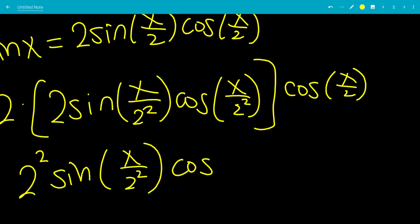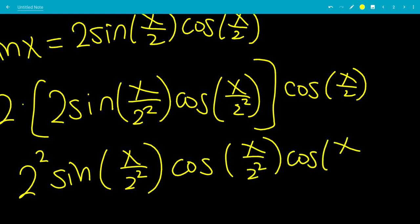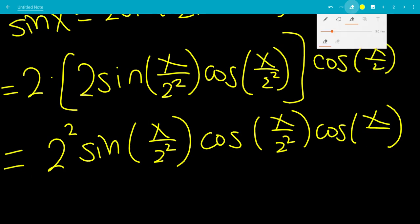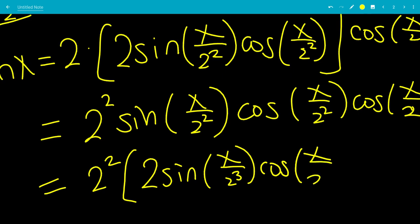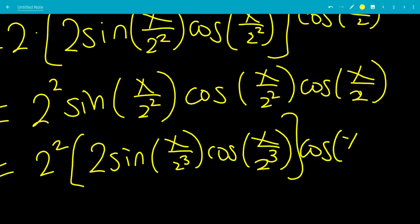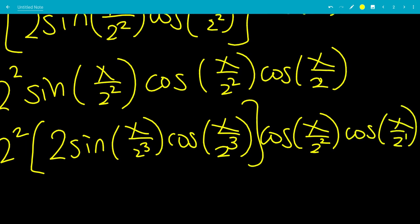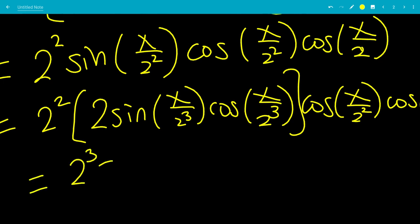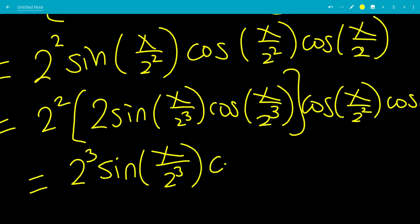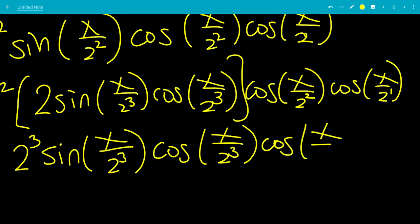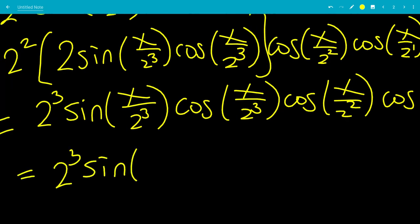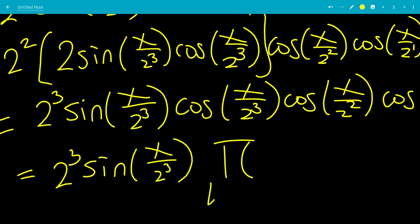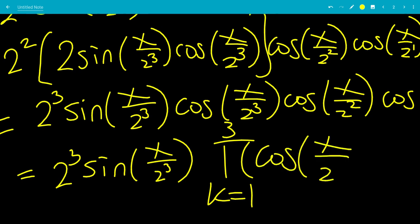And we also have cosine of x over 2. So continuing, this becomes 2 cubed times sine of x over 2 cubed, times the product from k goes from 1 to 3 of cosine of x over 2 to the k.